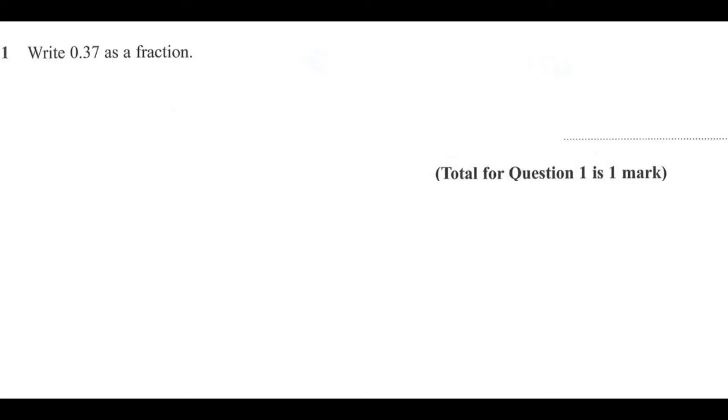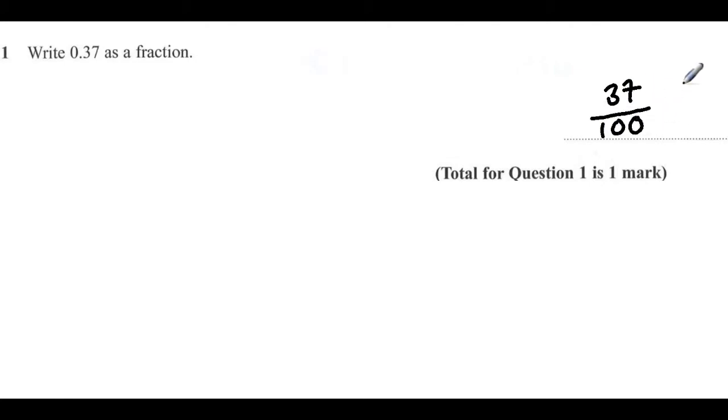Question 1. Write 0.37 as a fraction. The answer is 37 over 100. And that's our final answer.